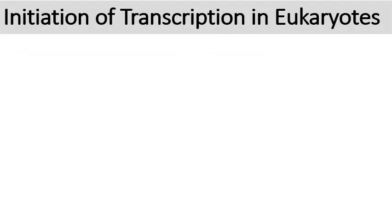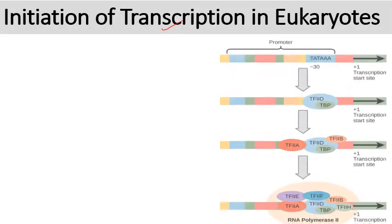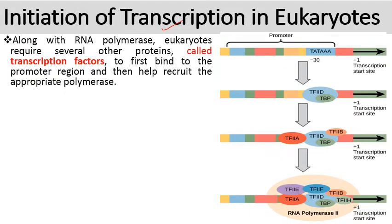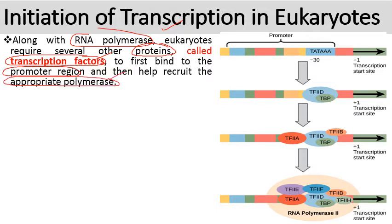The first step is initiation. For this process, along with RNA polymerase, eukaryotes require several other proteins known as transcription factors. These transcription factors first bind to the promoter region and then help recruit the appropriate RNA polymerase.